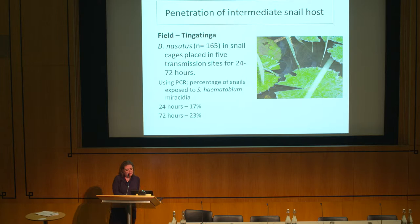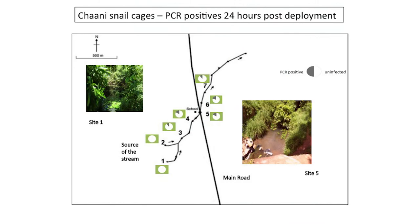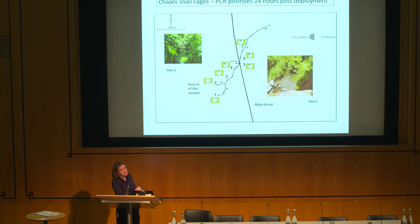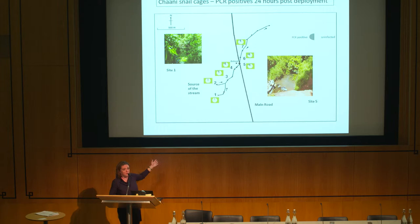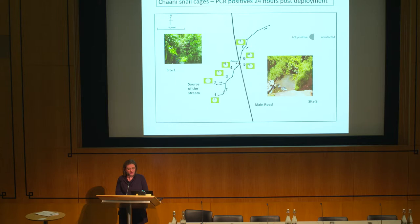At Chani — where we also saw the pre-patent data — where the road crosses the stream, there's a school nearby and we've been monitoring this site for many years with generally high transmission. At the source of the stream, snails collected there and placed in cages showed nothing picking up. But as you move towards the transmission site, the number of snails infected within 24 hours becomes quite high — up to 17% infected, similar to Tingatinga.